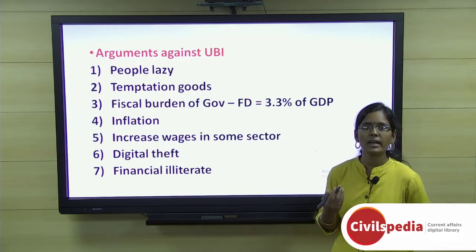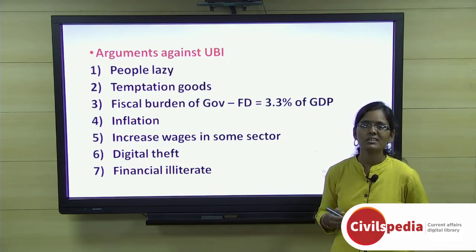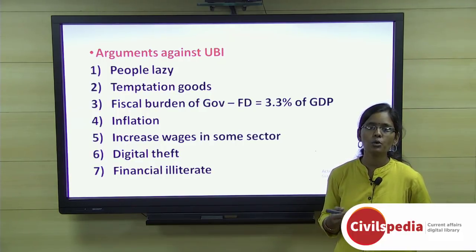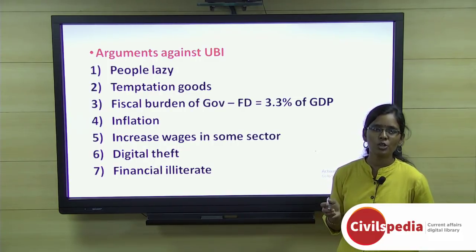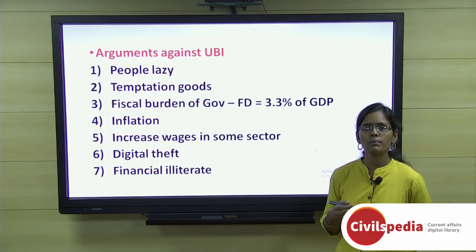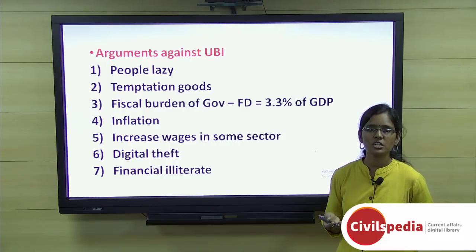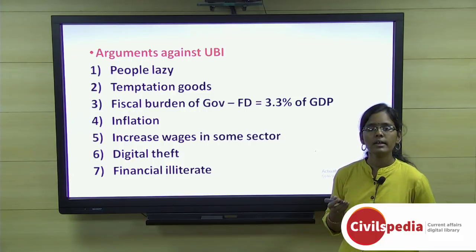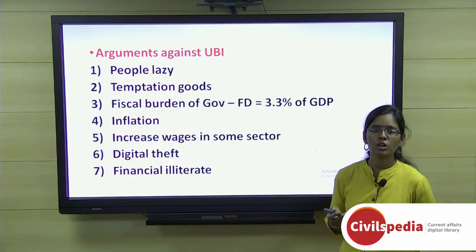Arguments against UBI include: first, it may make people lazy since they already have minimum income and may not seek employment; second, people may not spend the money on health or education but instead on temptation goods like alcohol and tobacco, negatively impacting health standards; third, it would impose a huge fiscal burden on the government.